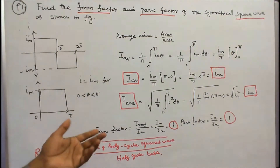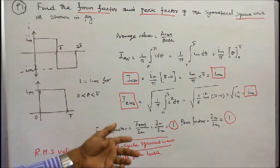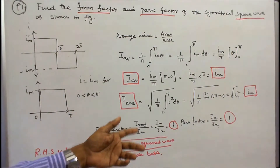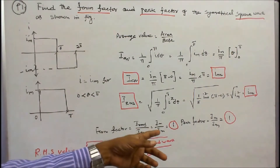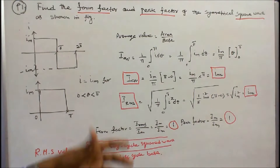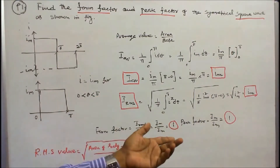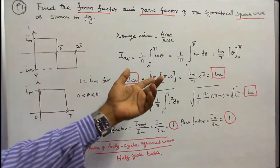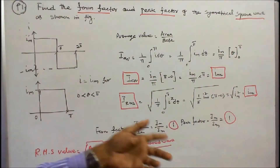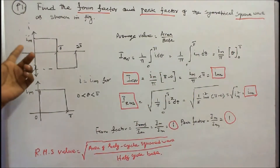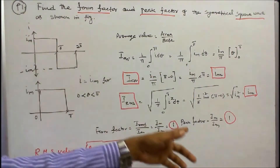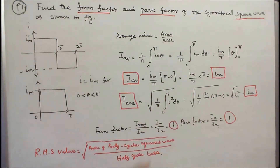Form factor = I_rms / I_average = I_m / I_m = 1. Similarly, peak factor = I_maximum / I_rms = I_m / I_m = 1. For a square wave, both the peak factor and form factor equal 1.